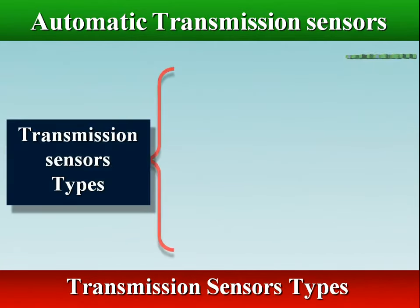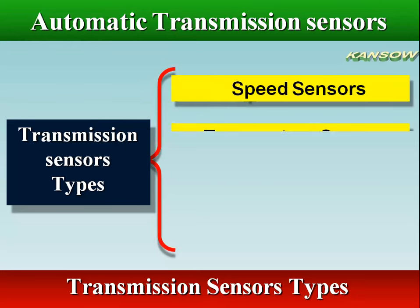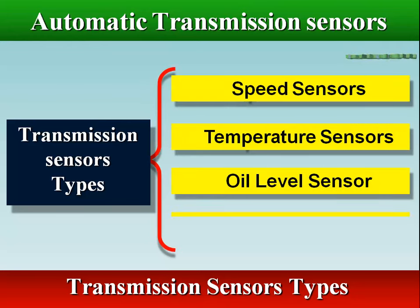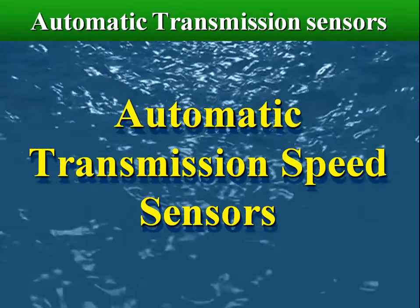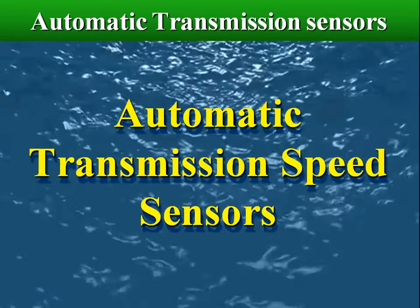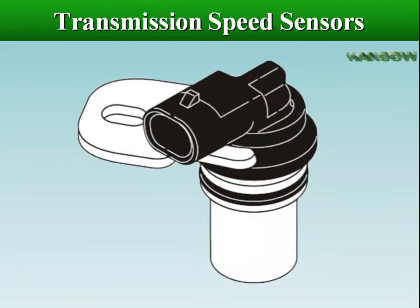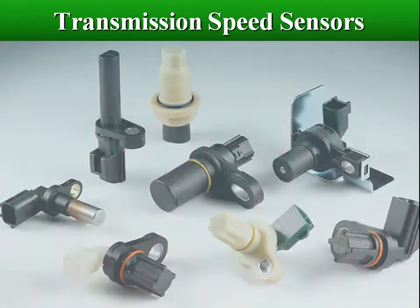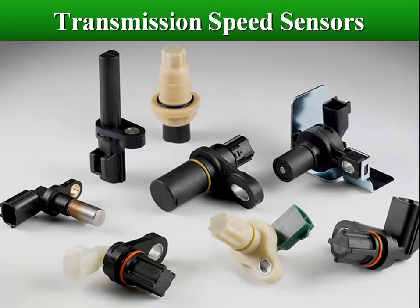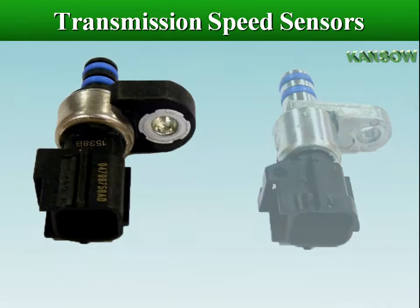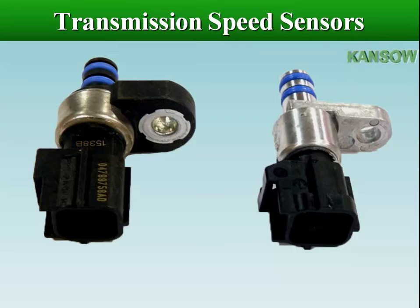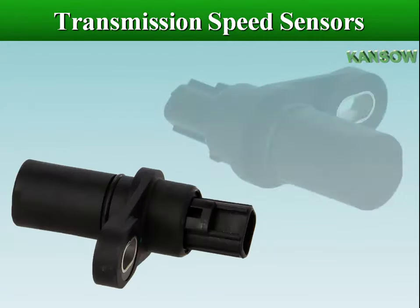Automatic transmissions have different types of sensors which measure speed, temperature, oil level, and pressure. Transmission speed sensors detect the input, output, or intermediate speed of the transmission, and the transmission controls use this information to modify various transmission functions such as shift points and perform diagnostic tests.